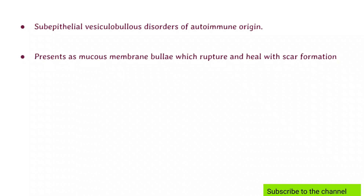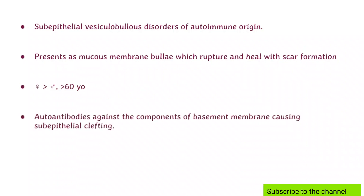The disease presents as bullae formed on the mucous membrane, which then rupture and heal with scar formation. Scar formation is an important feature. As with most autoimmune diseases, females are more commonly affected, and patients are typically more than 60 years of age. The pathophysiology involves auto-antibodies formed against components of the basement membrane, which leads to sub-epithelial clefting.